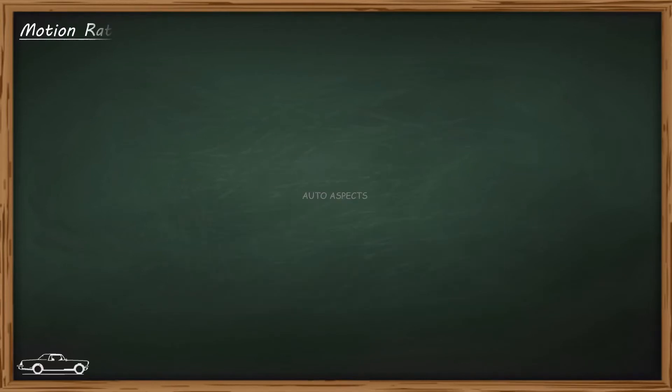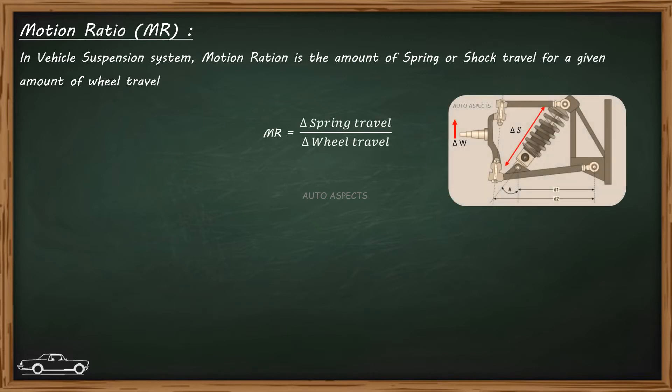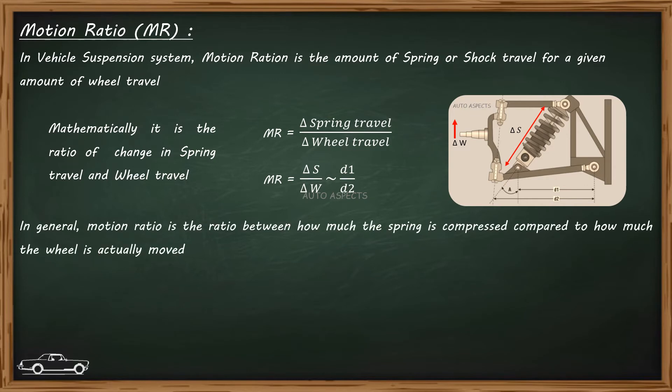So, what is motion ratio? In a typical vehicle suspension system, motion ratio is nothing but the amount of spring travel for a given wheel travel. Empirically it can be written as ΔS/ΔW, which means it is the ratio of change in spring travel and wheel travel. Motion ratio also refers to how much the spring is compressed for a given wheel travel.